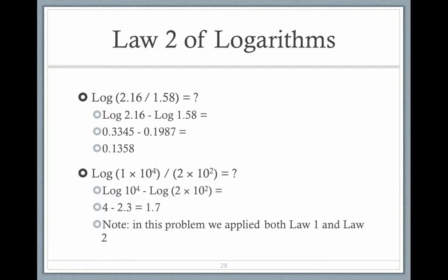Look at the second one: log 10 to the fourth divided by 2 times 2 squared. So you have log base 10 to the fourth minus log base 10 of 2 times 10 squared, which is 4 minus 2.3, equals 1.7. So we use both log 1 and log 2 in this example.